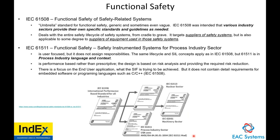IEC 61508 is an umbrella standard — generic and sometimes vague — providing information for various industry sectors. It is specifically for suppliers of safety systems, but can also be used to some degree by suppliers of equipment to be used in safety systems. Some EPCs and end users apply 61508 as the only standard needed. However, process safety — the process industry sector — actually calls for IEC 61511, which is Safety Instrument Systems for the Process Industry Sector, with language and context specific to that industry.